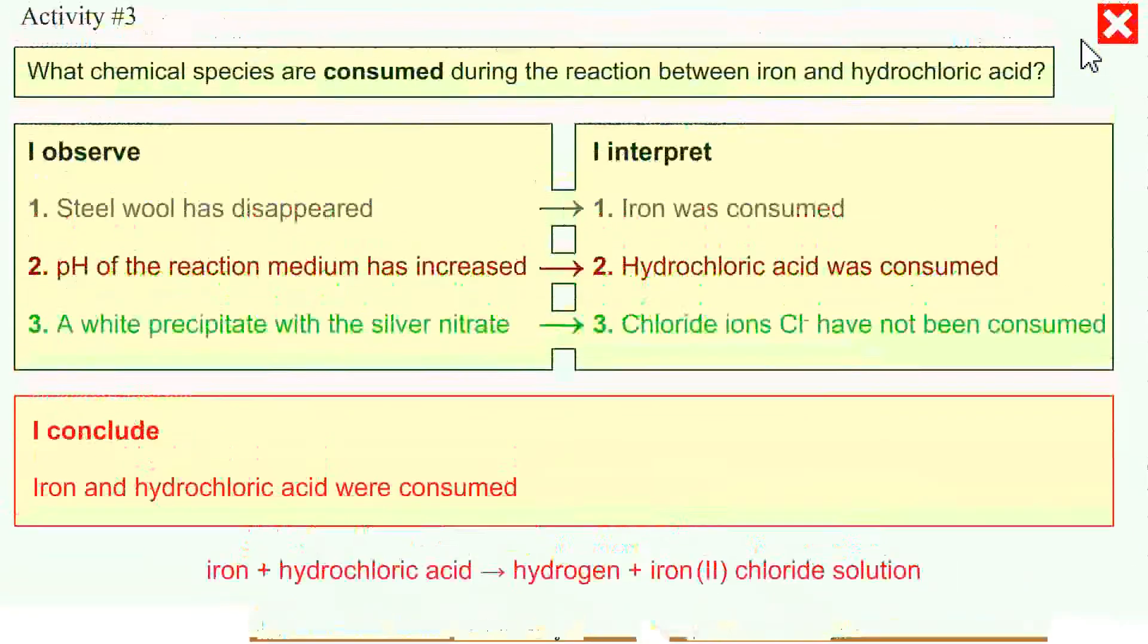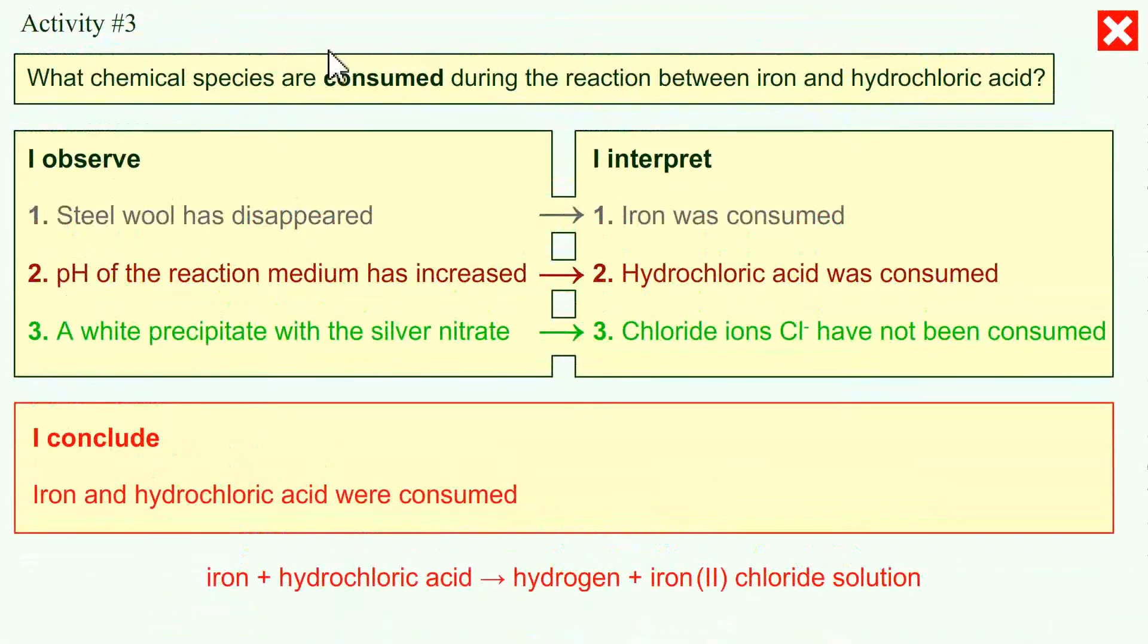Now for the chemical species which have disappeared, which have been consumed. Iron wool disappears completely if you let the reaction take place. So iron is consumed. The pH has increased, meaning hydrochloric acid is consumed. The silver nitrate test still gives a white precipitate, meaning the chloride ions are still there.